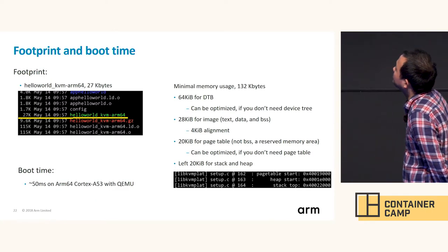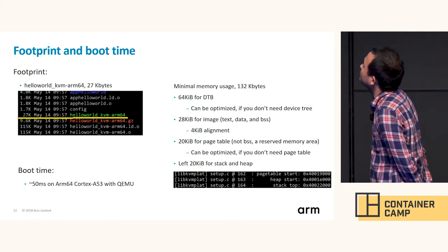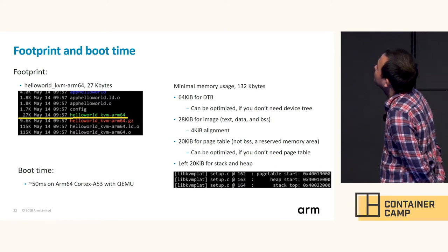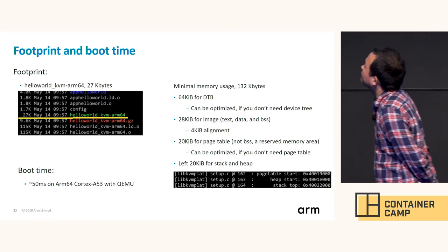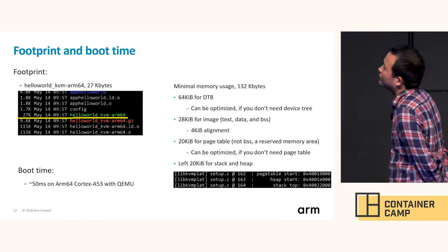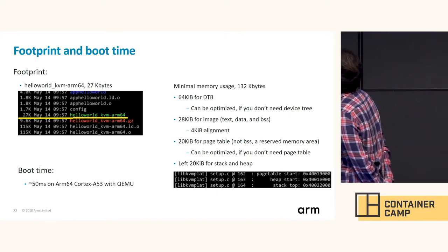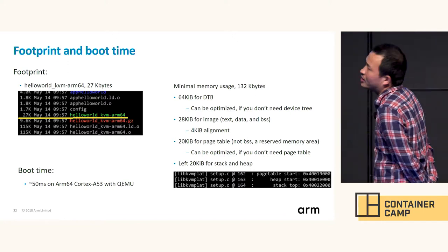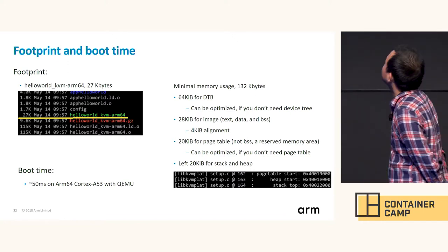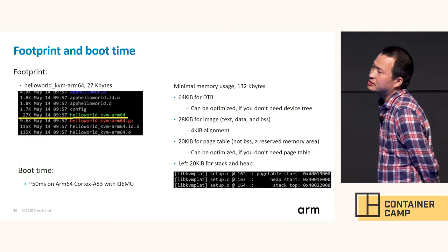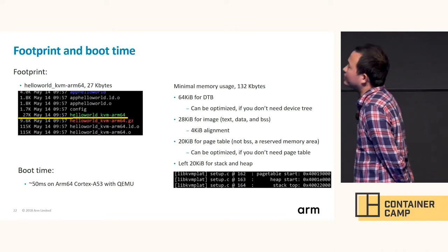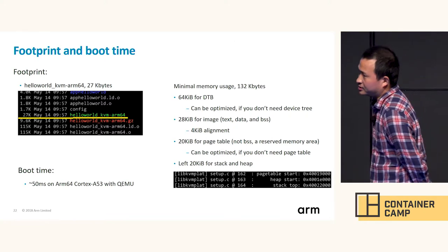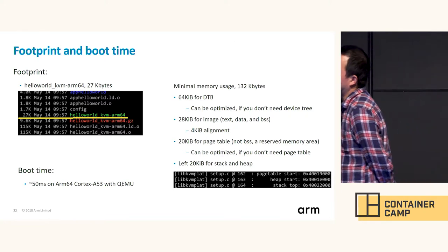Here are some performance statistics for UniKraft. We have built a hardware sample. The footprint is very small — about 27 kilobytes. The minimum memory usage is about 132 kilobytes, including 64 kilobytes for device tree, which can be optimized if you don't use device tree.